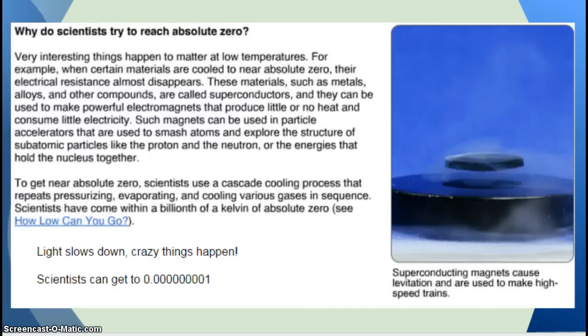Why do scientists try to reach absolute zero? Scientists have been trying over and over to get things cold enough to stop the motion of atoms. When this happens, light slows down.